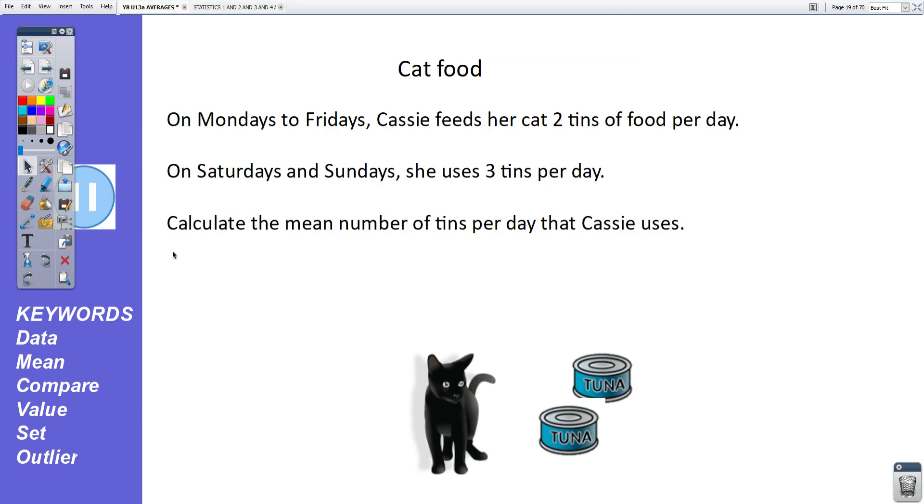Moving on. Cat food. On Mondays to Fridays, Cassie feeds her cat two tins of food per day. On Saturdays and Sundays, she uses three tins per day. Calculate the mean number of tins per day that Cassie uses. Pause the video and unpause when you're ready to mark your answer.